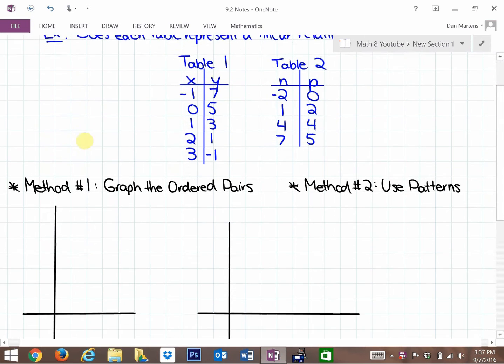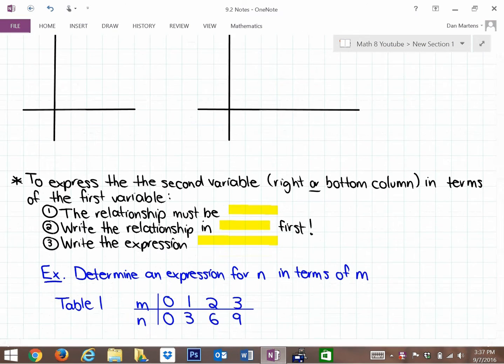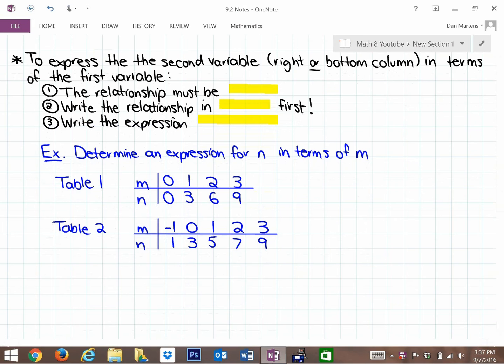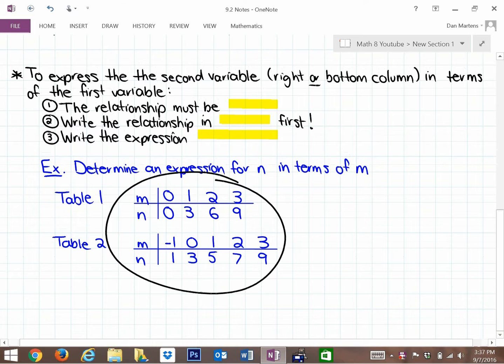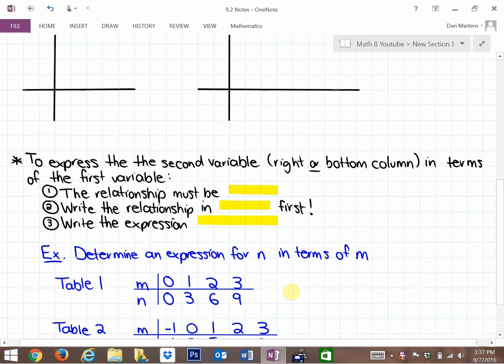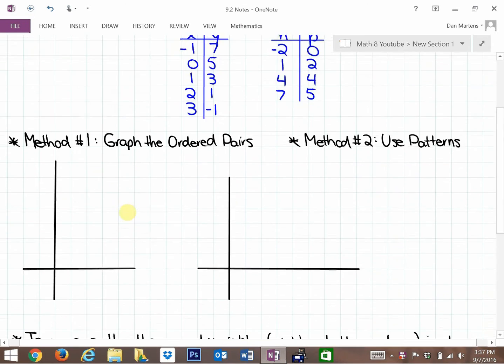First of all, we're going to look at the patterns in tables to see if they represent linear relationships. And the second thing we're going to look at is how they're related and see if we can make an expression for the relationship in the tables. So let's get into that.